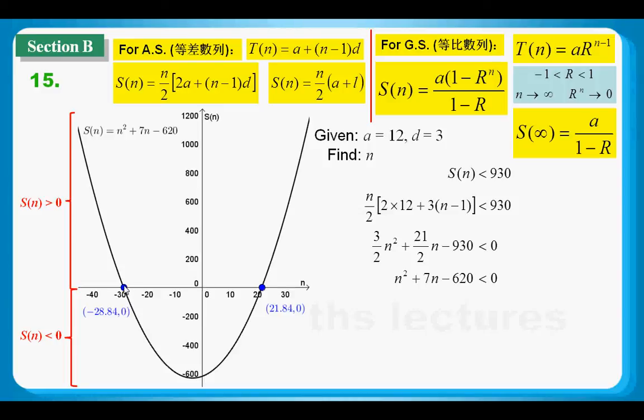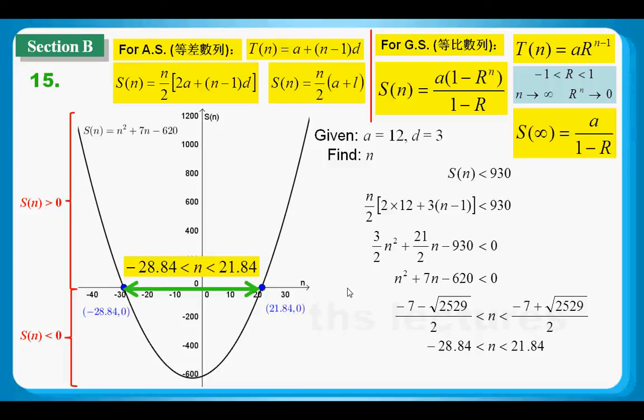So in the lower part of this graph, or lower graph of this parabola, you will find that every single value of S(n) is less than 0. So we can find the range of n, which is between minus 28 something and plus 21 something. Of course, we can use the quadratic formula to find out these two values too. And let me remind you n is our lateral number, so n should be counted from 1 and n must be a positive integer. So the final answer should be the greatest number of rows is 21.